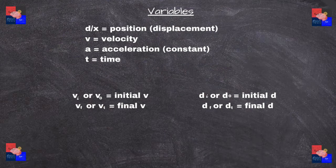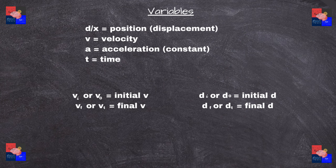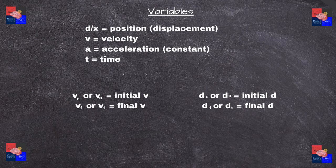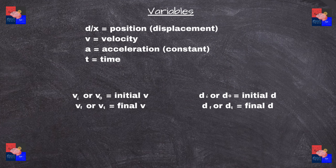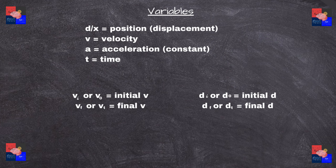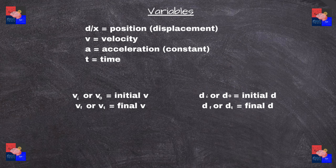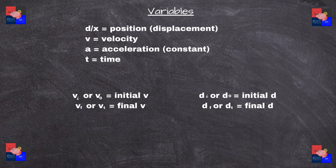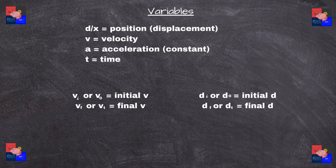As we're discussing motion through mathematical means, we have to introduce ourselves to certain variables. First we have displacement or position, depicted with either d or x. Then there is velocity, depicted with v, acceleration with a, and finally time with t. There are also subscripts: v0 or vi means initial velocity, and vf or vt means final velocity. Same applies to position.